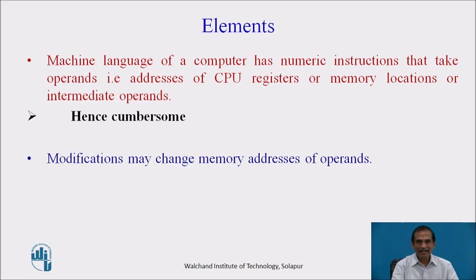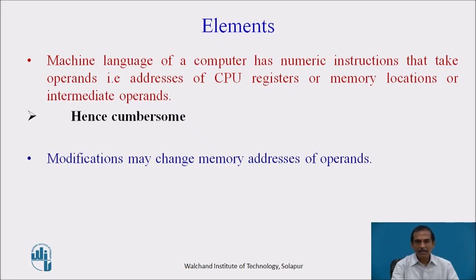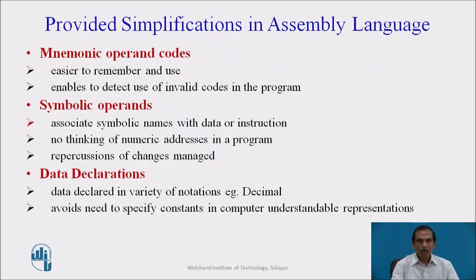As we understand the elements of an assembly language: a machine language of a computer has numeric instructions that take operands which are addresses of CPU registers or memory locations or intermediate operands. This makes the whole problem very cumbersome. Whenever modifications are made or changes are developed in a program, these changes involve changes in the memory addresses of the operands.